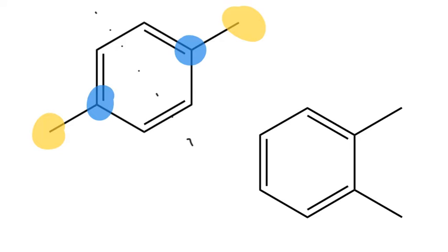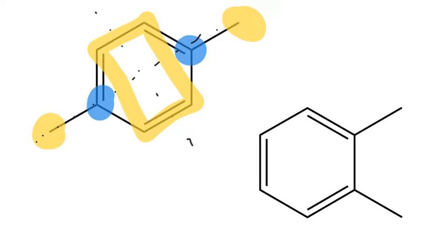The final peak we're going to see — so we are just going to see three peaks for this molecule — comes from these four carbons all around the middle. There is another line of symmetry through our molecule, and those CH carbons, all four of them, are absolutely equivalent to each other so they give just one peak. In total for this molecule we can expect to see three peaks in the carbon-13 NMR spectra.